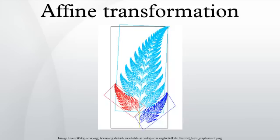Properties: an affine transformation preserves the collinearity relation between points — that is, points which lie on the same line continue to be collinear after the transformation. It also preserves ratios of vectors along a line — that is, for distinct collinear points, the ratio of distances is preserved. More generally, it preserves barycenters of weighted collections of points. An affine transformation is invertible if and only if A is invertible.